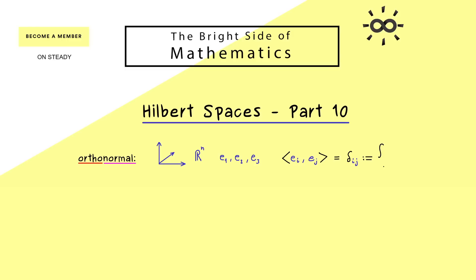The Kronecker delta is quite a simple symbol: we either have 1 or 0. If the indices are the same, we have the length of the vector given as 1. If they are not the same, we have orthogonality. So this is what you should remember — exactly this condition for vectors is what we call Orthonormal.